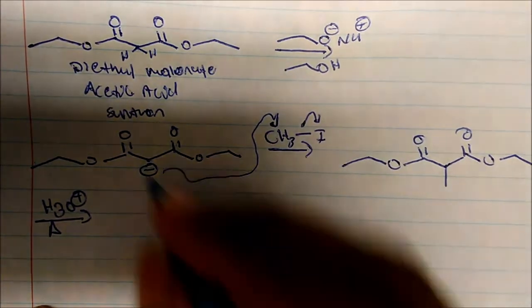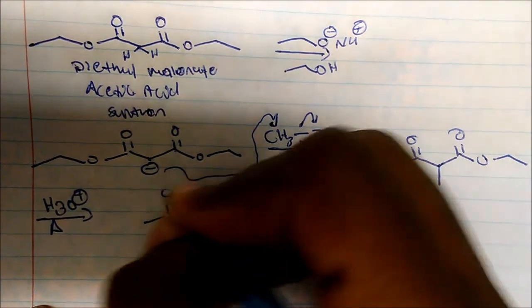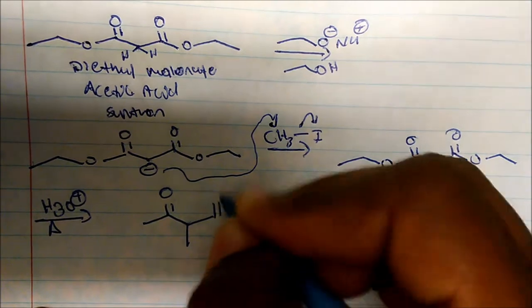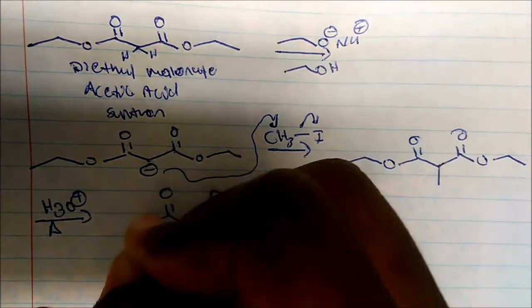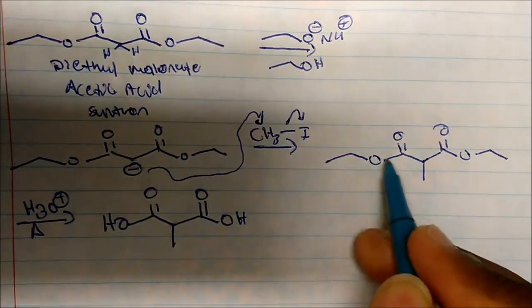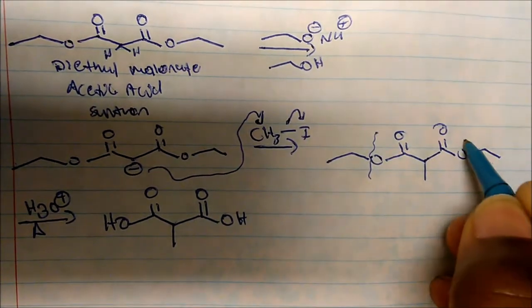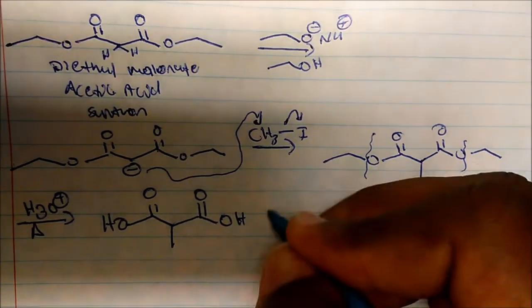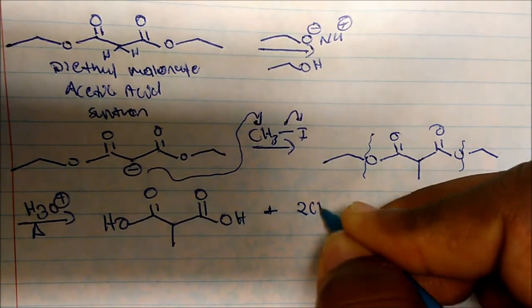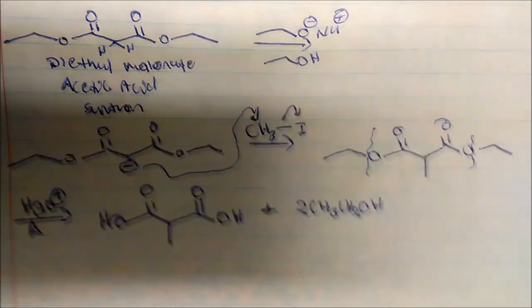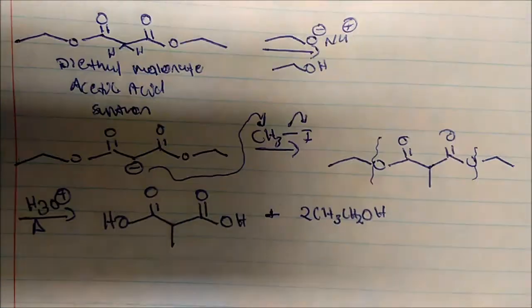So when I hydrolyze, here's the structure that I get. There's my dicarboxylic acid. We're just literally hydrolyzed from here. And we also have two moles of CH3CH2OH. We don't care about this. This is the structure that we care about.